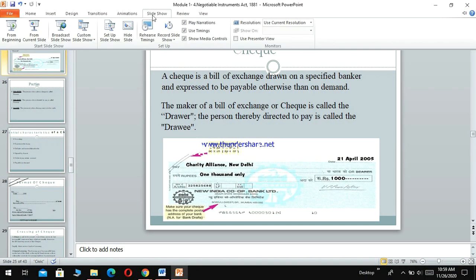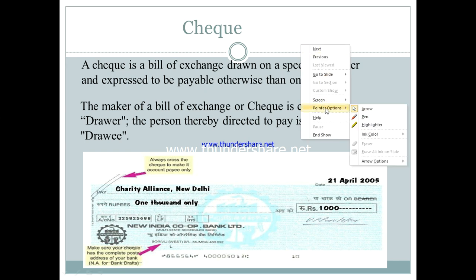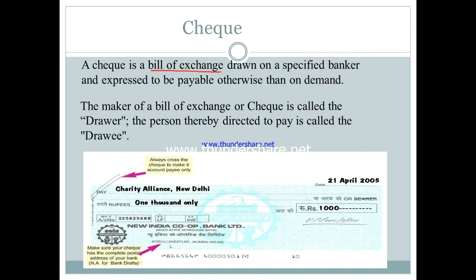Bills of exchange has three parties: drawer, drawee, and payee. Drawer gives an unconditional order to drawee to make payment to payee. Now, cheque is defined under Section 6 of the Negotiable Instrument Act. It is a sort of bill of exchange, but the difference is it is drawn on a specified banker. So where in bills of exchange a person was involved as drawee, in a cheque the bank takes the place of drawee.